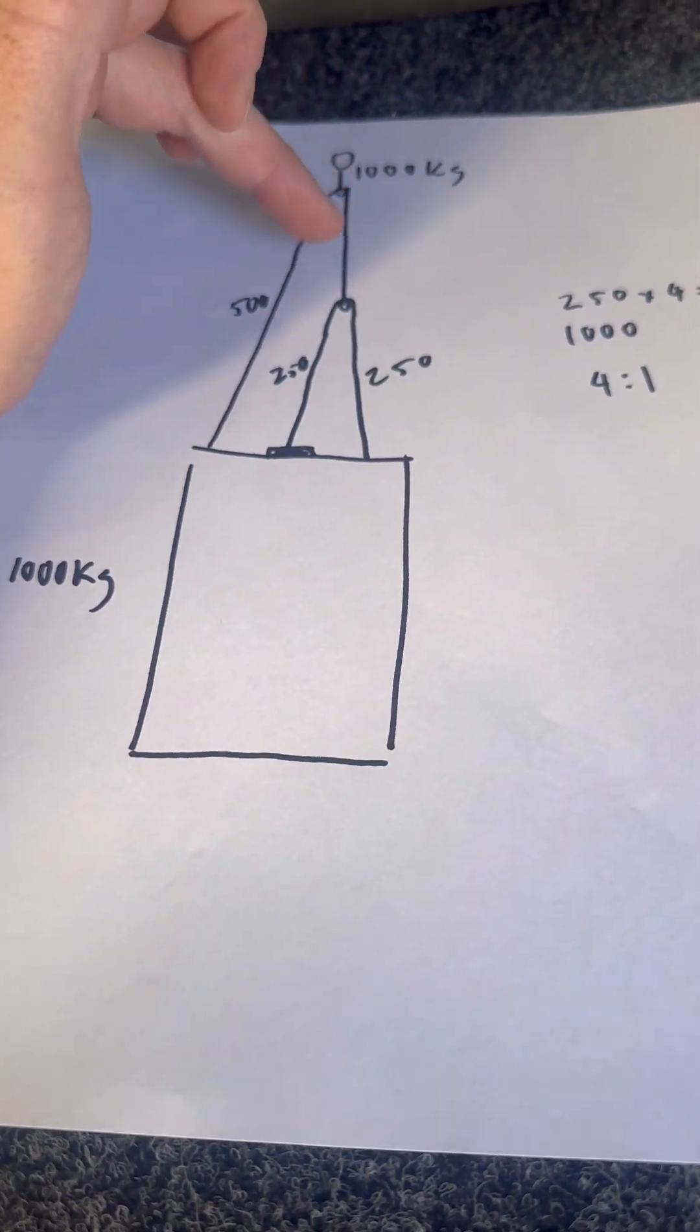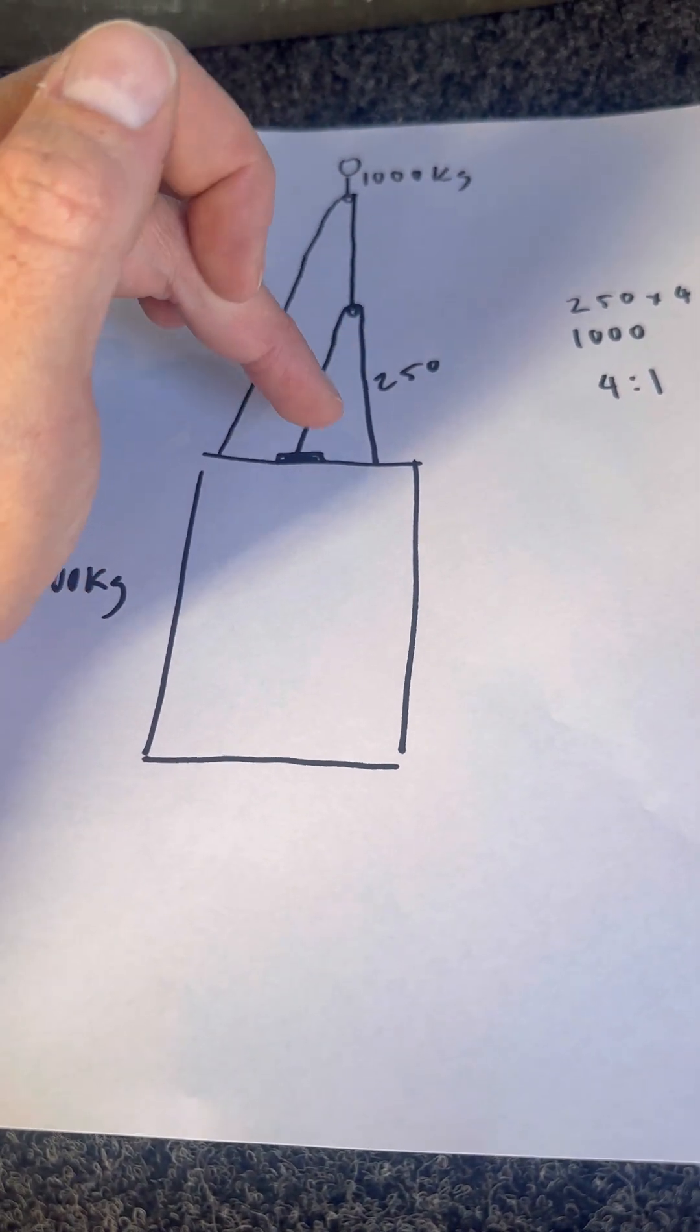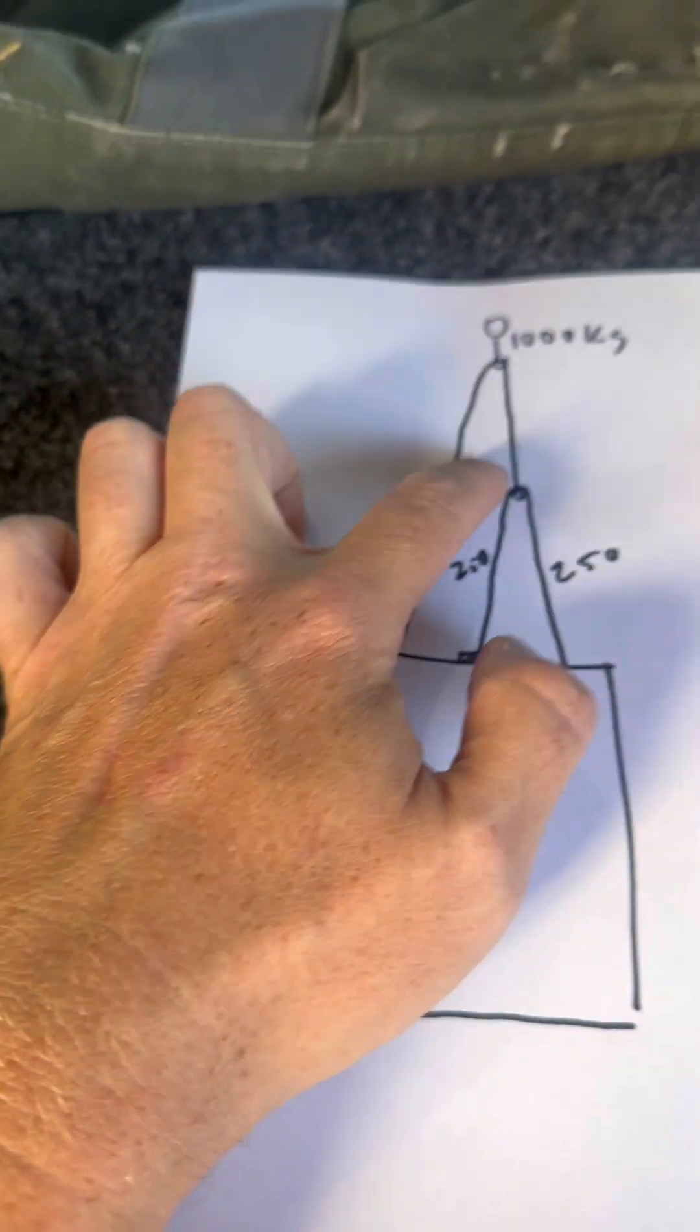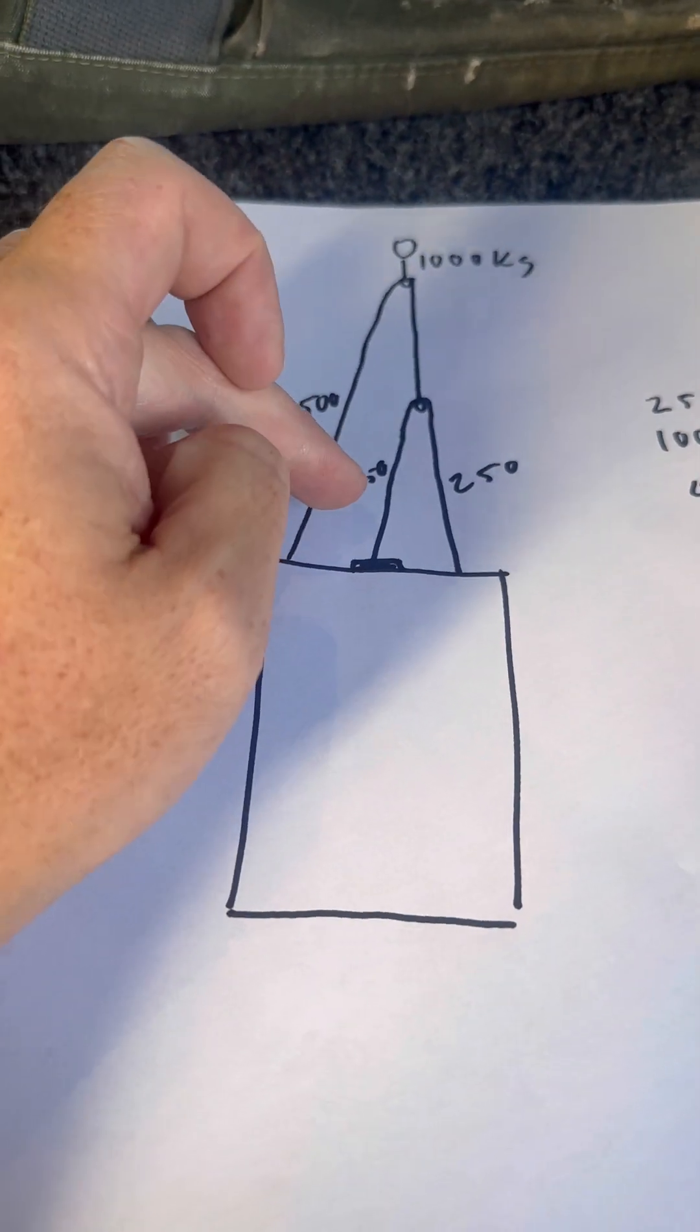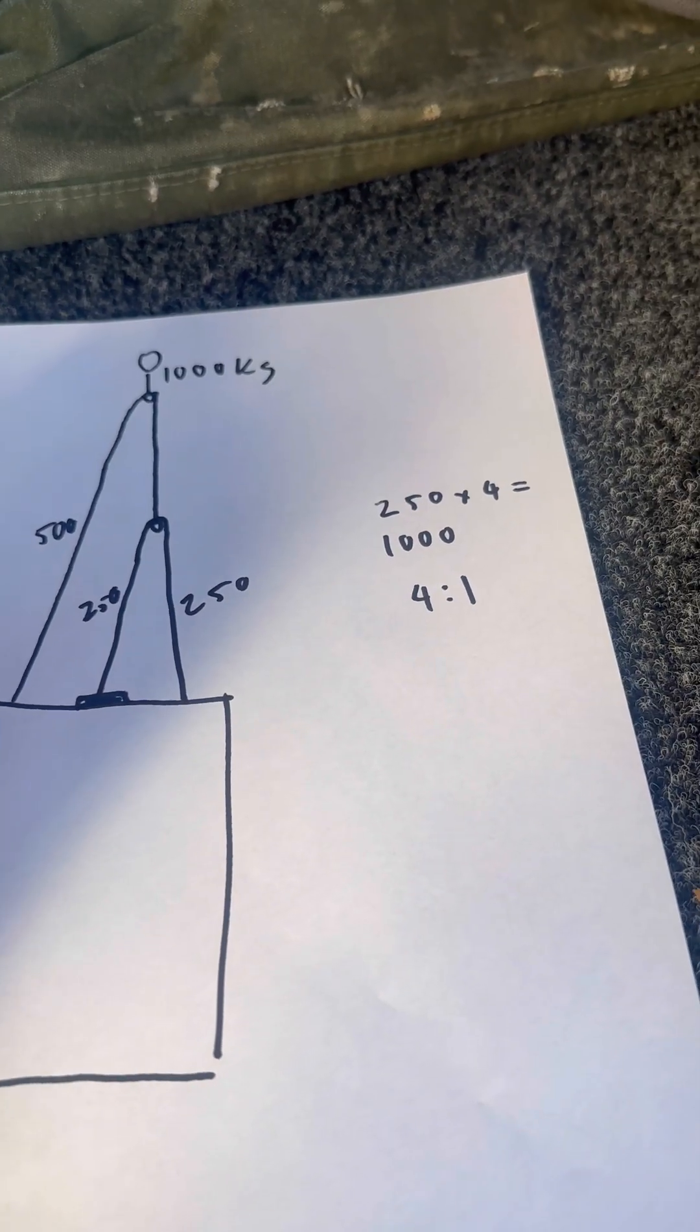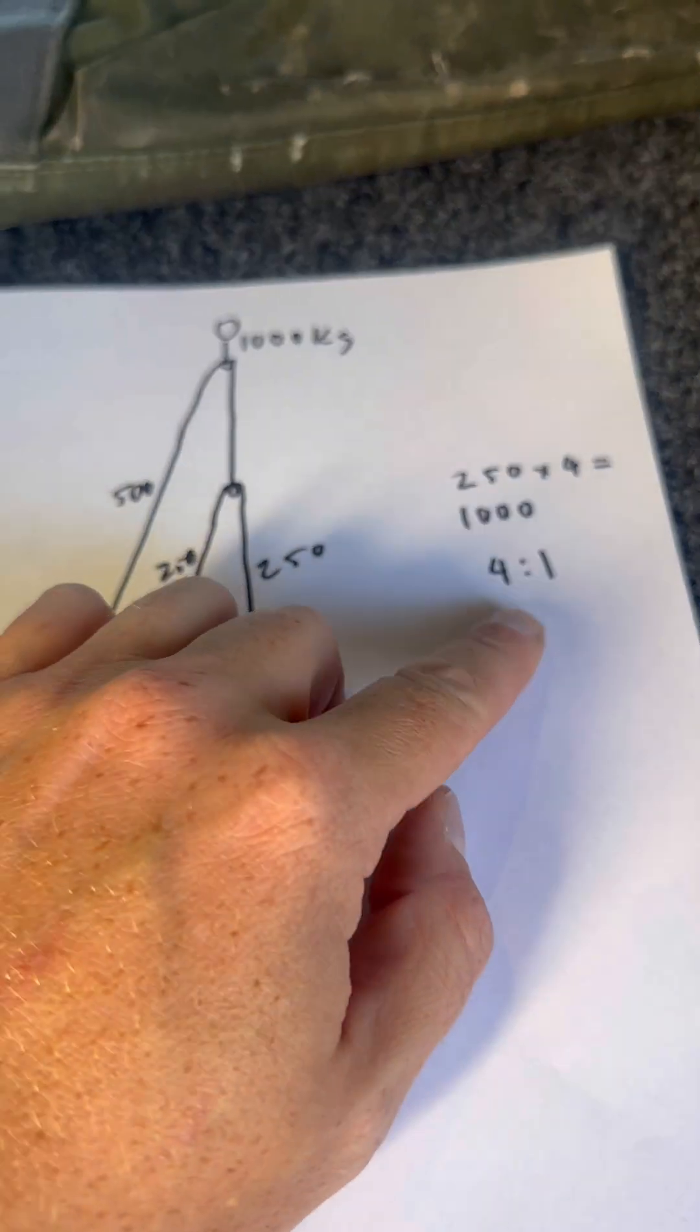Okay, in this case, this will be a winch extension line. This is our actual winch line, which goes around the pulley back to the vehicle and divides that 500 kilos up to now 250 and 250. Now, how many times does 250 go into 1,000? 4 to 1.